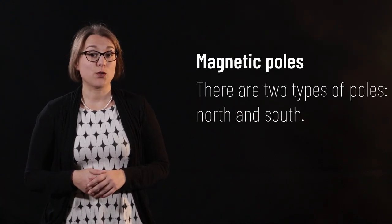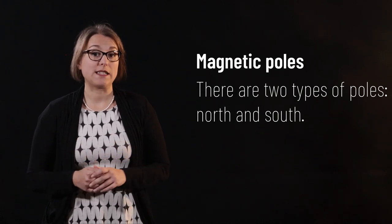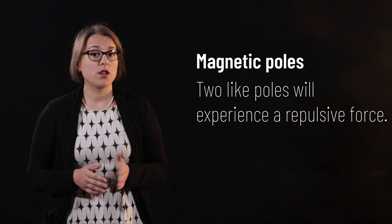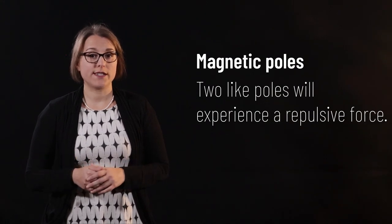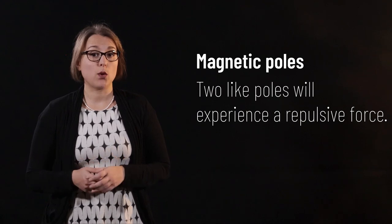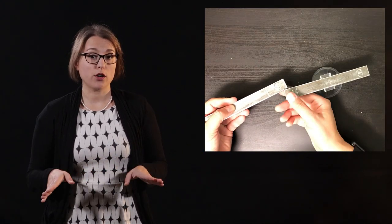Similar to what we learned in lecture 22 with different types of charges, magnetic poles experience two types of interactions. Two like poles, north and north, or south and south, will repel. That is, if I hold two like poles together, they will experience a force that causes them to move apart from each other.